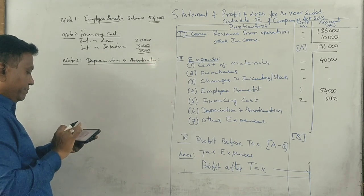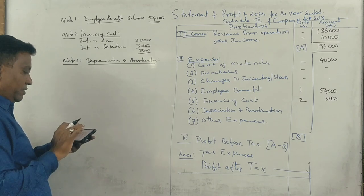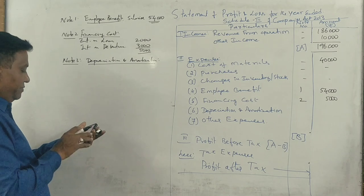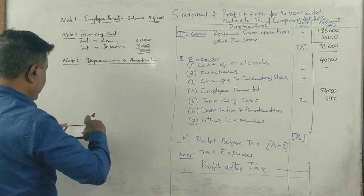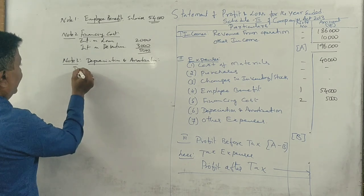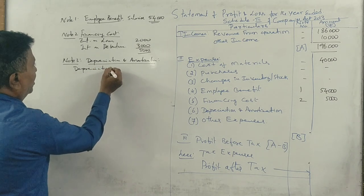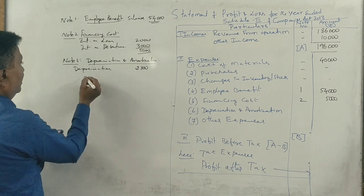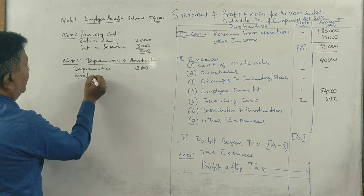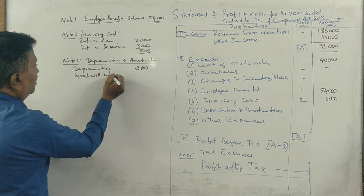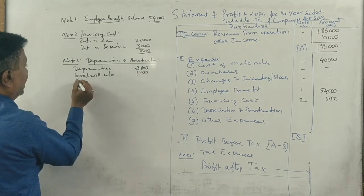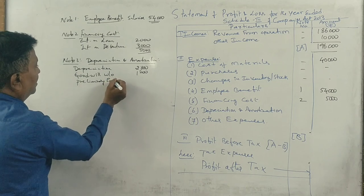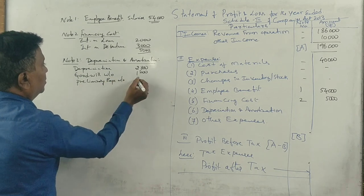First, depreciation: $2,800. Goodwill written off: $1,200. Preliminary expenses written off: $2,000.